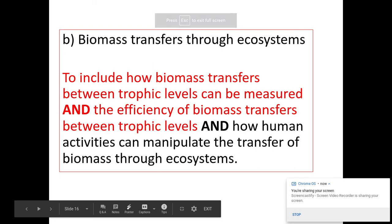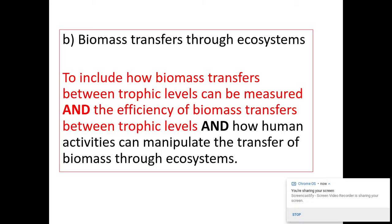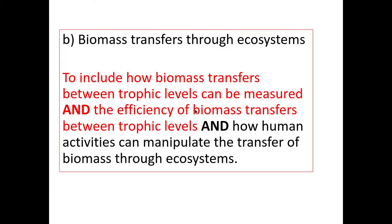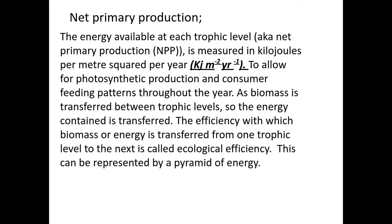Welcome to part two of biomass through ecosystems, looking at the OCR specification for A-level biology 6.3.1. We've already looked at the first part of that lesson objective in part one. We're going to finish off the last bit here, looking at biomass and how humans impact on it. Net primary production — a key thing to take away is the units that are used. Net primary production is what is available for the next step in the food chain.